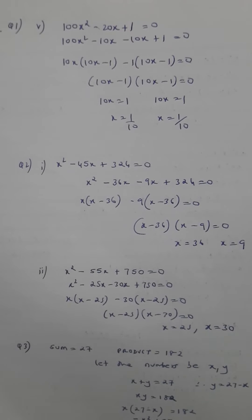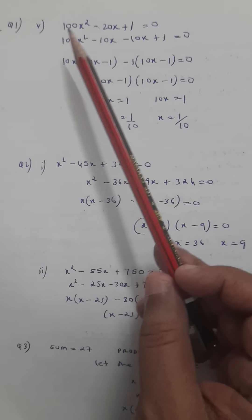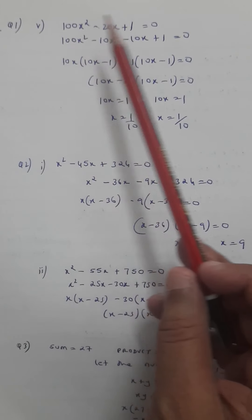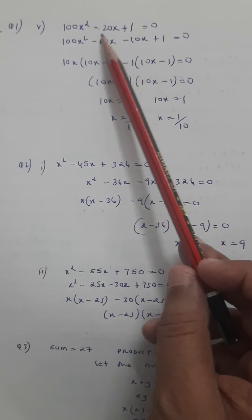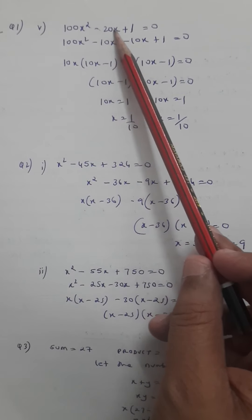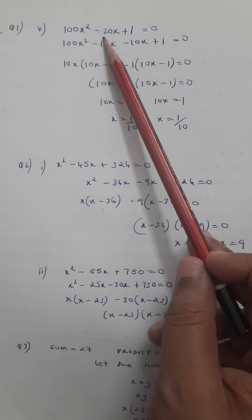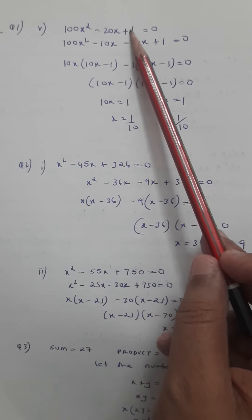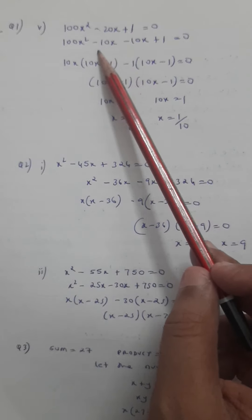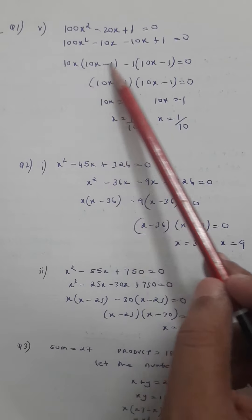Continuing with question one, part five — factorization by splitting the middle term. When you multiply the first and last terms you get 100x². The number at the center is minus 20x, so you need two factors which on adding give minus 20x and on multiplying give 100. That is minus 10 and minus 10.